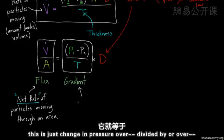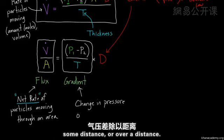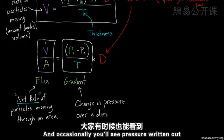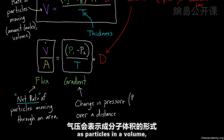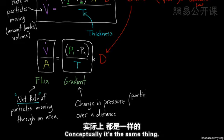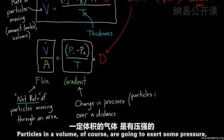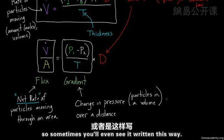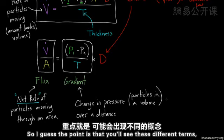And this gradient over here, this is just change in pressure over some distance or over a distance. And occasionally, you'll see pressure written out as particles in a volume, right? Which is kind of the same thing. Conceptually, it's the same thing. Particles in a volume, of course, are going to exert some pressure. So sometimes, you'll even see it written this way. So I guess the point is that you'll see these different terms, and I just want you to be familiar with them.